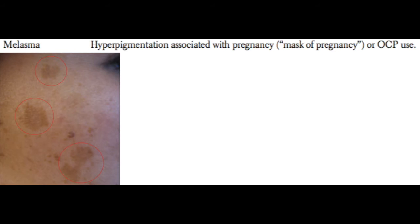Next we have melasma, also known as chloasma. Melasma is a disorder seen in pregnancy that has no clinical consequences at all — it's a perfectly normal part of pregnancy. It's just some hyperpigmentation seen on the face, and for that reason it's sometimes known as the 'pregnancy mask.' This can also be seen with OCP use, or oral contraceptives.